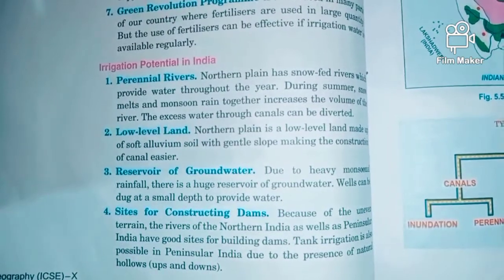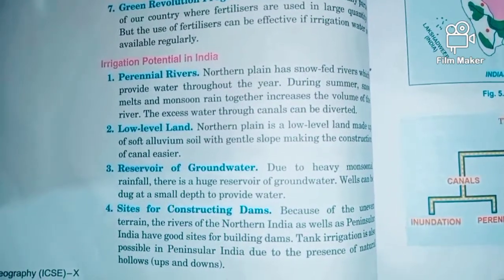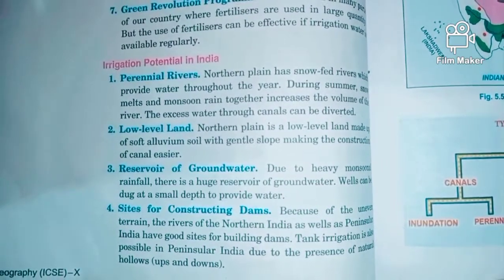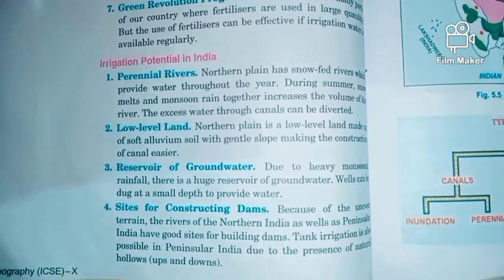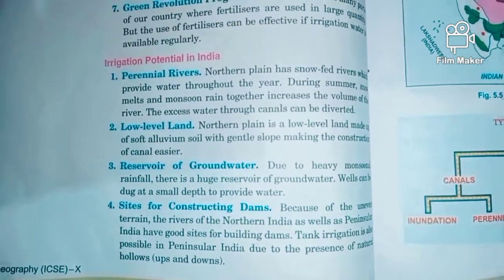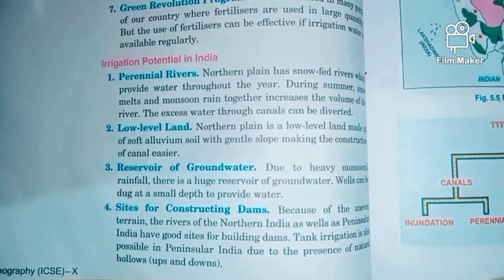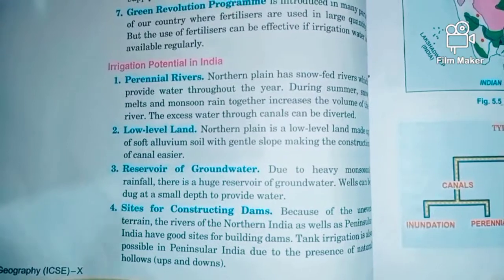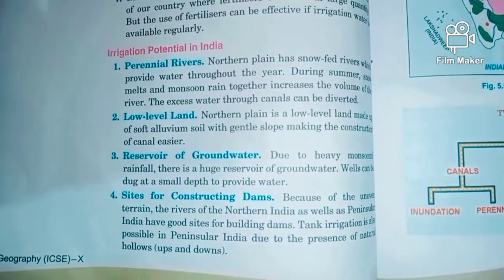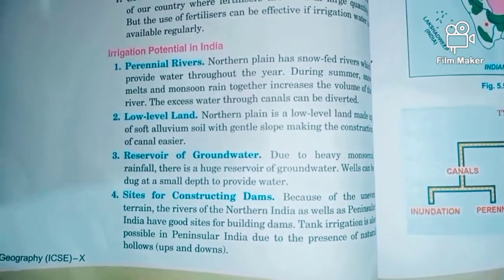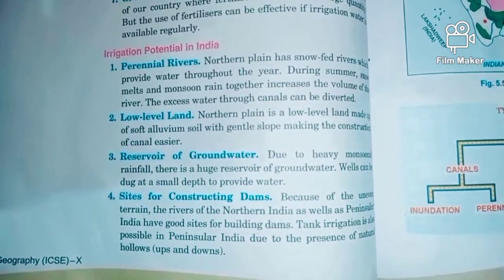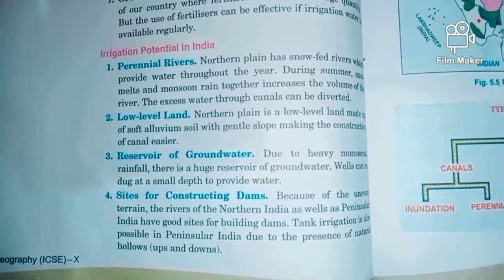The next factor is low-level land. The northern plains are low-level lands made up of soft alluvium brought by perennial rivers. The gentle slope makes the construction of canals very easy here, so water from the rivers can be directly provided through canals to lower areas with less water.